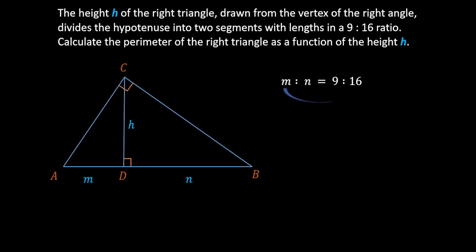We multiply the outer terms: 16 times M equals the multiplication of the inner terms, 9 times N. Dividing both sides by 16, we get that M is equal to 9N over 16.